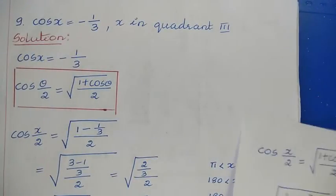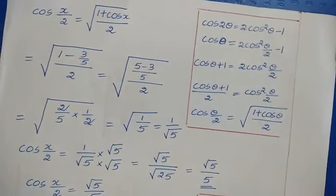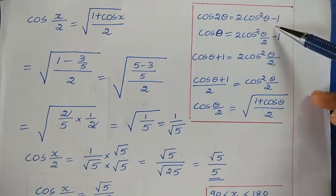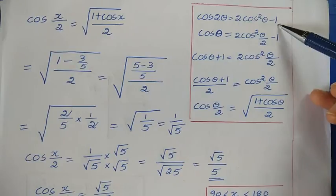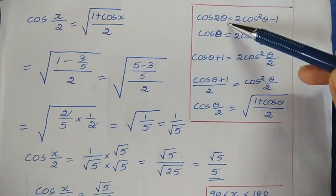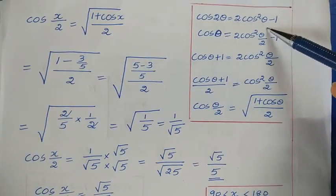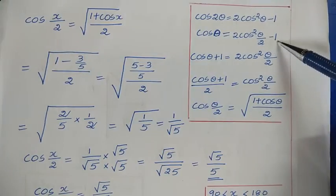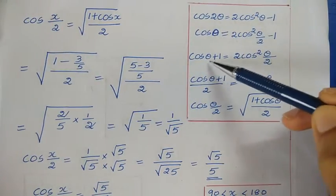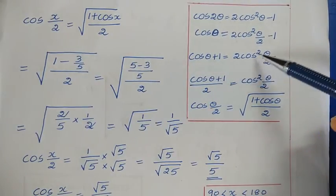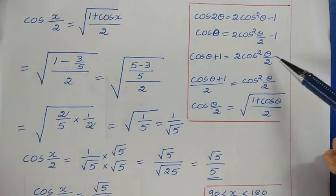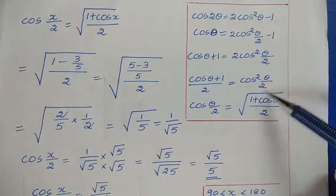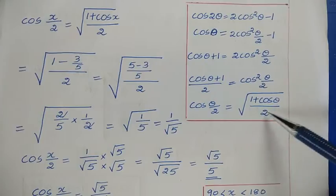Next, find cos(x/2). From the formula cos 2θ = 2cos²θ − 1, replacing 2θ with θ: cos θ = 2cos²(θ/2) − 1. Rearranging: cos θ + 1 = 2cos²(θ/2), so cos(θ/2) = √((1 + cos θ)/2).